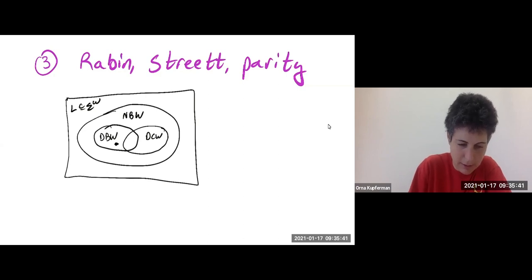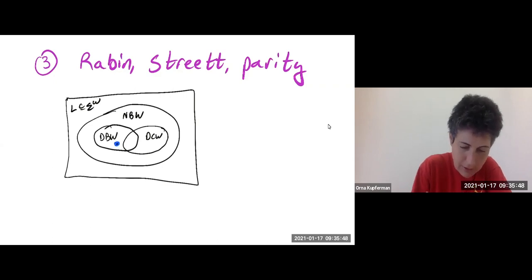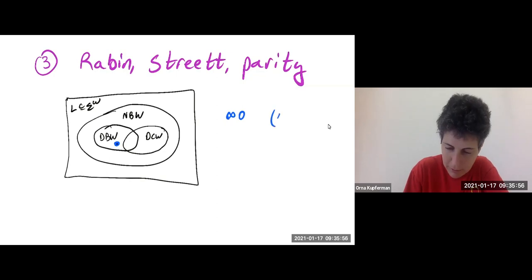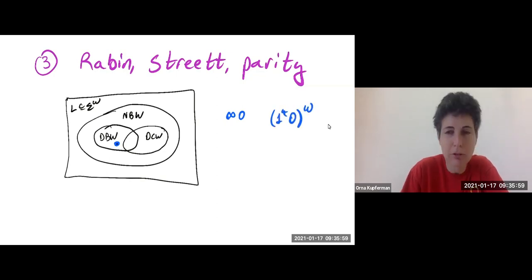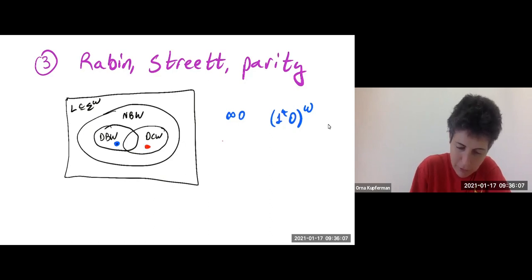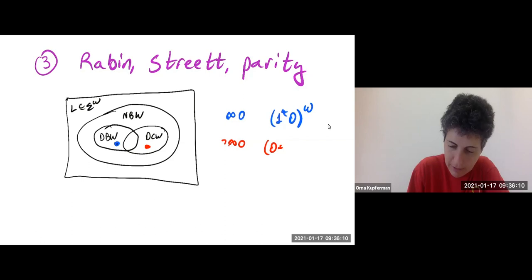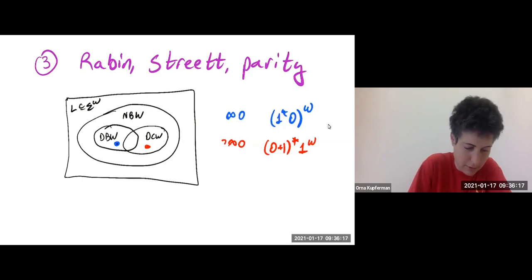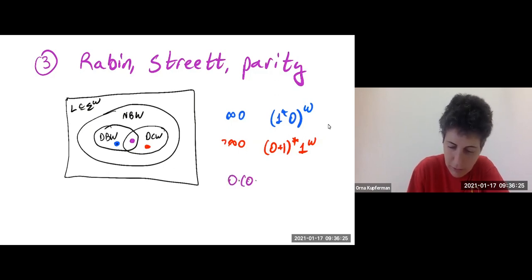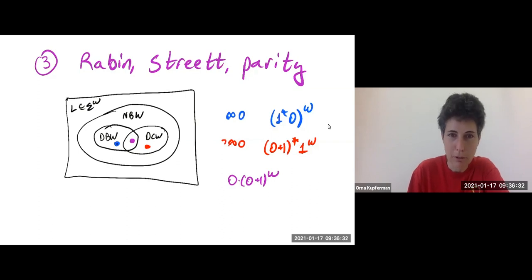For example, we saw a language that is in DBW and not in DCW. The blue language here is, for example, 'a infinitely many zeros.' I can also be formal and write an omega-regular expression. The complementary one — not infinitely many zeros. If I write an omega-regular expression, I want to see infinitely many ones. There are also languages in the intersection; for example, all languages of words starting with zero. This can be recognized both by a deterministic Büchi and a deterministic co-Büchi word automaton.